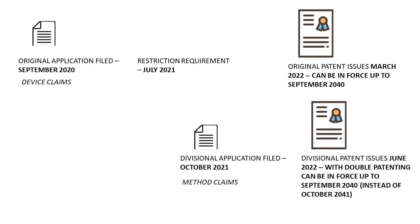But these method claims of the divisional may be quite similar to the original device claims, even though not identical. If the patent examiner determines that the claims of the two applications are similar enough, a double patenting rejection gets issued — basically saying that you can't have these claims of the divisional patent application in force beyond September 2040, when the original patent would expire.